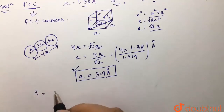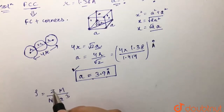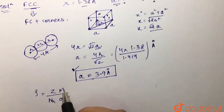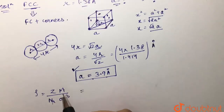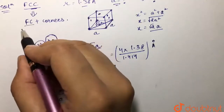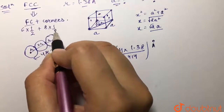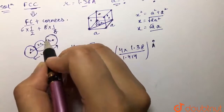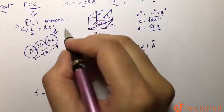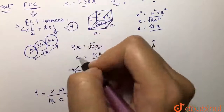To calculate the density, we use the formula: ρ = ZM/(Nₐ × a³), where Z is the number of atoms per unit cell, M is the molar mass, Nₐ is Avogadro's number, and a is the cell edge length. For FCC, Z = 4: there are 6 face centers each contributing 1/2, giving 3, plus 8 corners each contributing 1/8, giving 1, for a total of 4 atoms per unit cell.